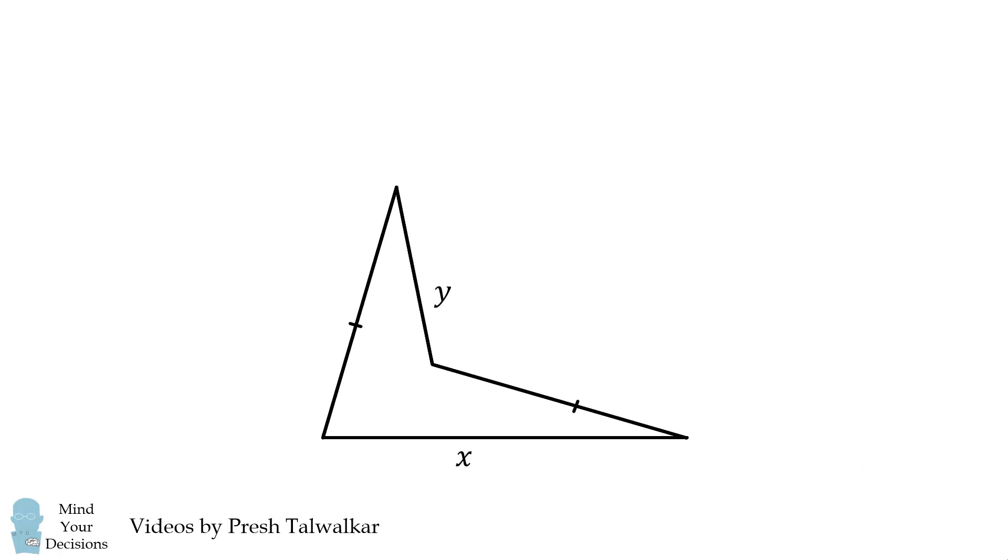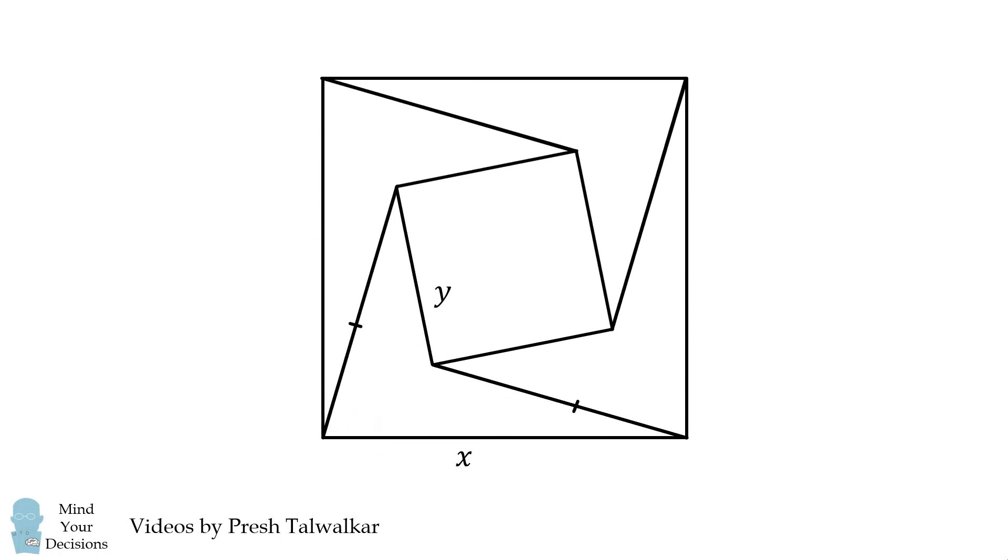We will make three copies of this quadrilateral. We will rotate each shape at 90 degree increments and overlap the two sides that are equal to each other. In the end, we will construct a new quadrilateral.